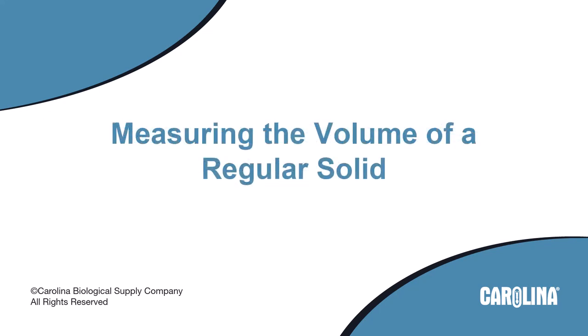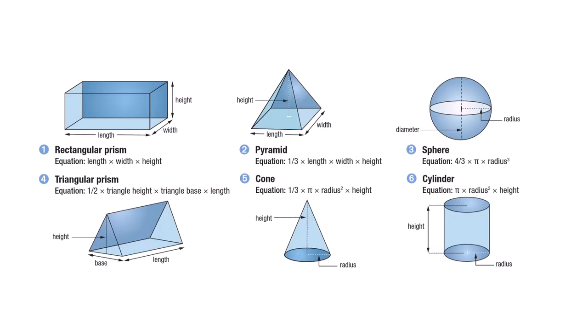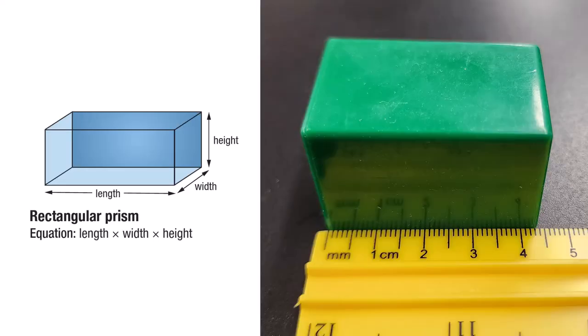Measuring the Volume of a Regular Solid. To measure the volume of a regular solid, such as a rectangular prism, pyramid, sphere, triangular prism, cone, or cylinder, you will need to know which dimensions are required. Then, you will use a ruler to measure those dimensions.